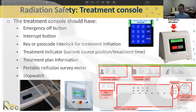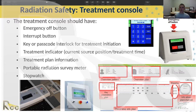You want to have a portable radiation survey meter — we'll go over which ones are appropriate. A stopwatch is also important so that if you have to enter the room, one person on your emergency response team has the role of timing how much radiation you're receiving, so we can do a dose reconstruction later.